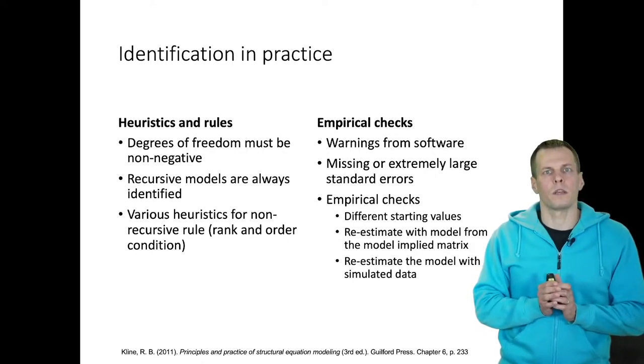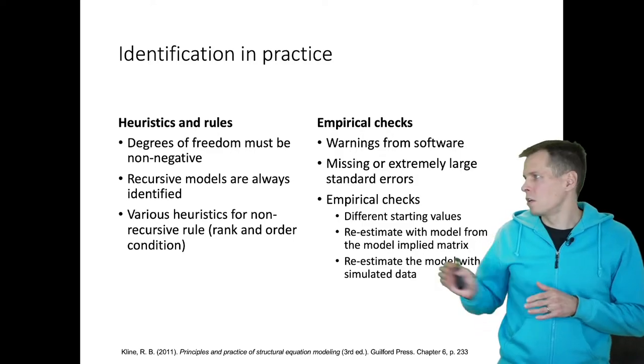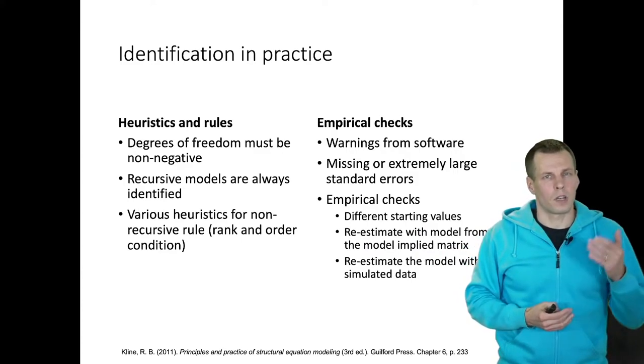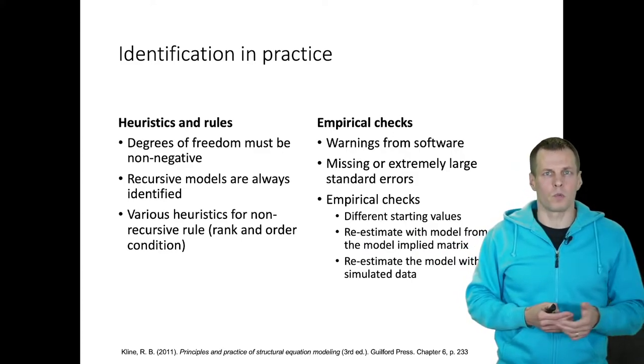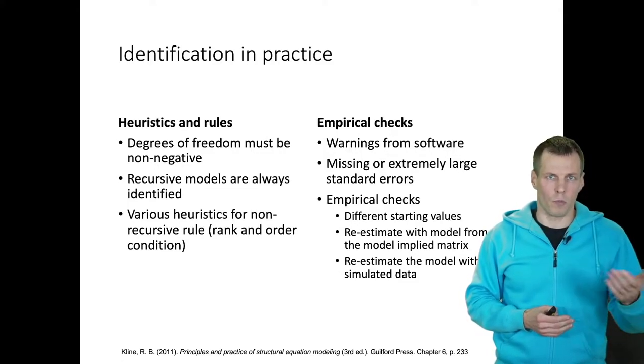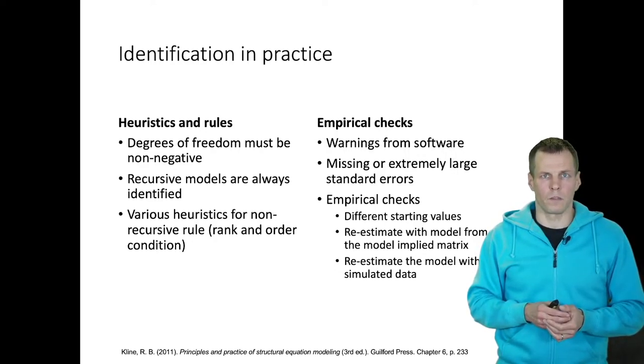In practice we use two different strategies for identification analysis. One is there are different heuristics and rules that you can apply. The simplest one is that you check if degrees of freedom is a non-negative number. It must be zero or positive. If it's negative then you know that the model is not identified for sure.